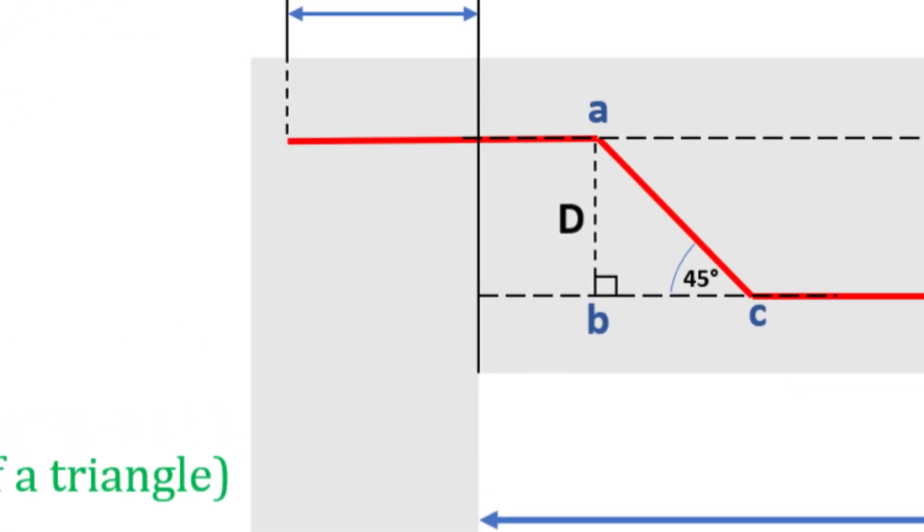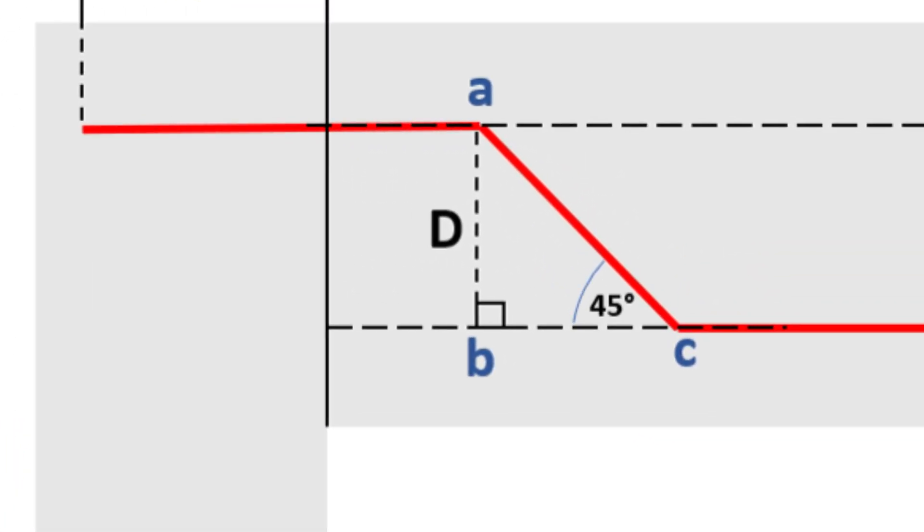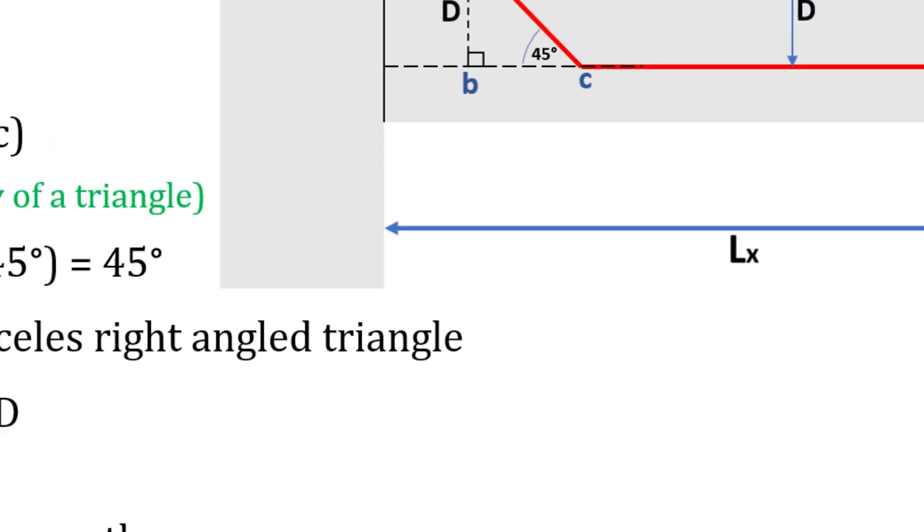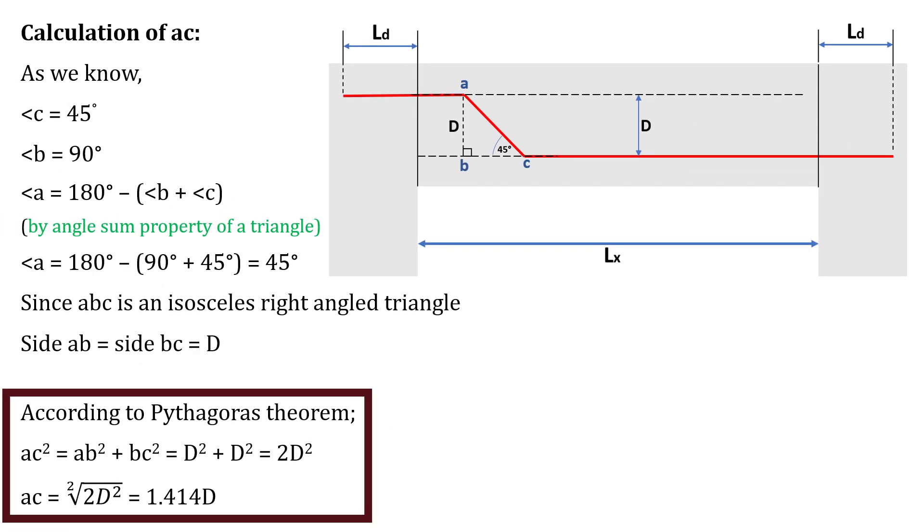Since ABC is an isosceles right angular triangle, the sides AB and BC are equal to D. Using the Pythagoras theorem, we can calculate the length of the side AC as the square root of 2 times D square which is equal to 1.414D.